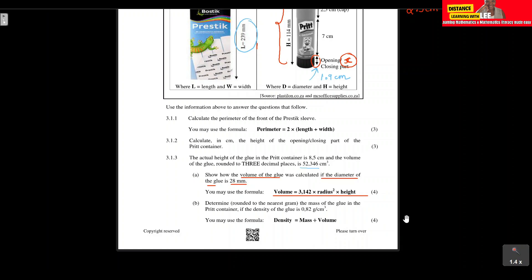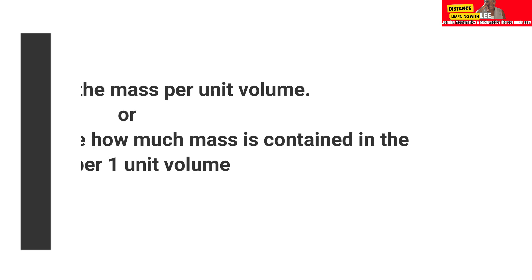Just pay attention. Remember in question a, we had already calculated or proved how they got the volume of 52.346 centimeters cubed. In question 3.1.3b, we need to determine, rounded to the nearest gram, the mass of the glue in the print container if the density of the glue is 0.82 grams per centimeters cubed.